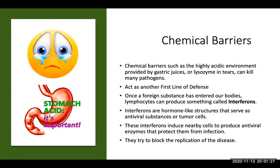Chemical barriers — the highly acidic environment provided by gastric juices in the stomach and lysozyme in your tears — can kill many pathogens, serving as another first line of defense. Once a foreign substance has entered our bodies, lymphocytes can produce something called interferons, which are hormone-like structures that serve as antiviral substances against tumor cells. They induce nearby cells to produce an antiviral enzyme that protects them from infection and try to block the replication of the disease.